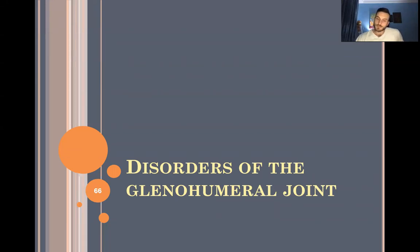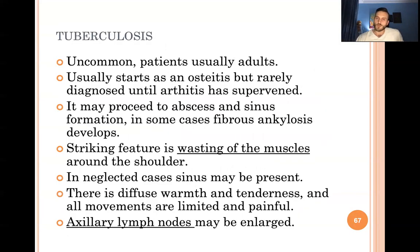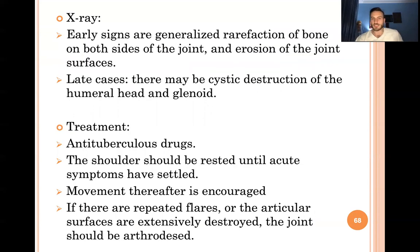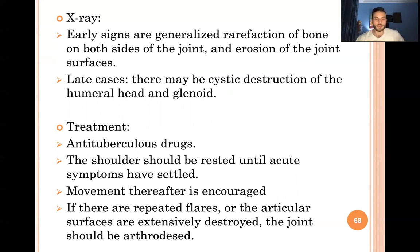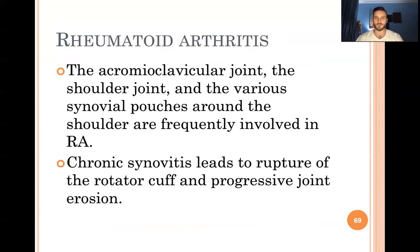Disorders of the glenohumeral joint include tuberculosis: key features are wasting of muscles around the humerus and axillary lymphadenopathy. X-ray shows early rarefaction of bone at the joint margins, with cystic destruction in later cases. Treatment requires anti-tuberculosis drugs (rifampicin, etc.) and shoulder rest until acute symptoms settle, followed by physiotherapy and exercise.